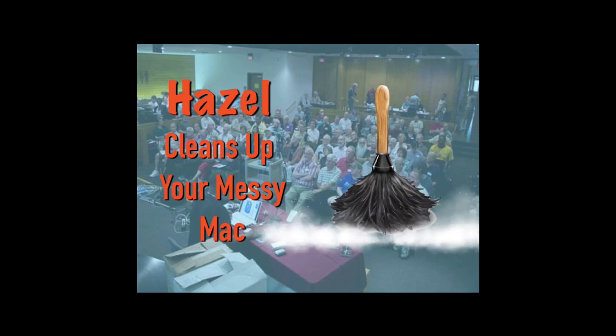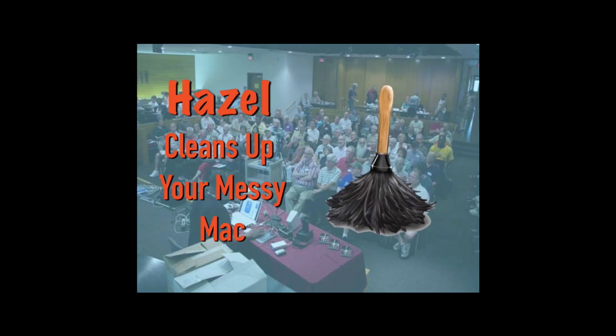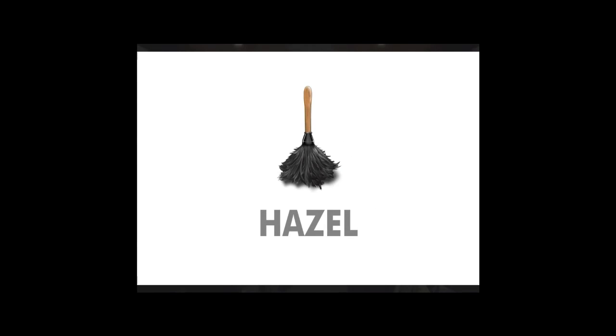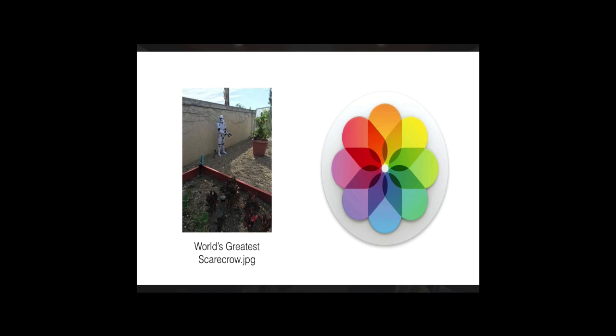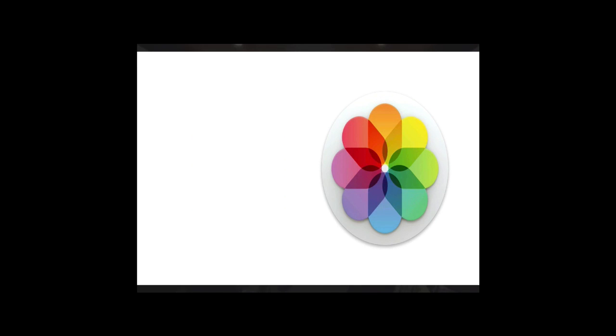What does Hazel do? Hazel cleans up your messy Mac, among other things. Hazel lets you take a file and automatically rename it. It can even look inside the file for a date and add that date from inside the file to the name of the file. Then Hazel can take that file and automatically move it into a folder so it's automatically saved. But that's just the tip of the iceberg. Hazel can also make it easier for you to save files so you can access them on your iPad. Hazel can take music and save it automatically to iTunes, or take pictures and automatically save them to Photos. Using Hazel, you can have music play when you get home, or automatically put your computer to sleep.